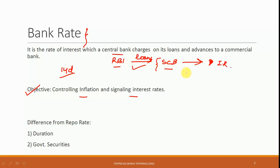Similarly, if RBI wants to decrease the inflation in the economy, what RBI is going to do is it is going to raise the bank rate, which will make it difficult for the scheduled commercial banks to take loans. As a result, money supply in the economy is going to get reduced and inflation is going to get reduced. So this is how bank rate is acting as a monetary policy instrument.